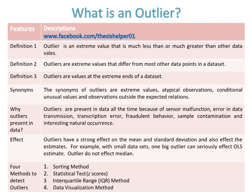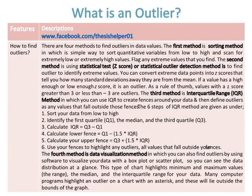Outliers do not affect the median. There are four methods to detect outliers: number one is the sorting method, number two is the statistical test Z-scores method, number three is the interquartile range (IQR) method, and number four is the data visualization method.